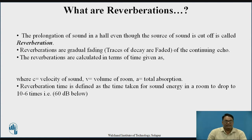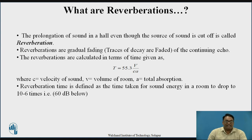In reverberations, the traces of sound gradually fade and decay. Whenever reverberations occur, the sound decays — it gets higher at the instant of speaking, and as the echo increases the sound fades until it is totally lost. Reverberation time is given by T = 55.3V / CA, where C is the velocity of sound, V is the volume of the room, and A is the total absorption. Reverberation time is defined as the time taken for sound energy to drop 60 dB below its original level.